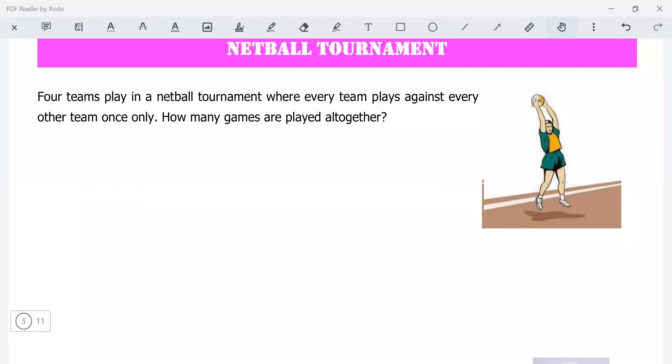Netball tournament. Four teams play in a netball tournament where every team plays every other team once only. How many games are played? I would suggest you draw, let's say, four dots on the page. Let's call the teams A, B, C, and D. And each time a team plays another team, draw a line. That's one game.